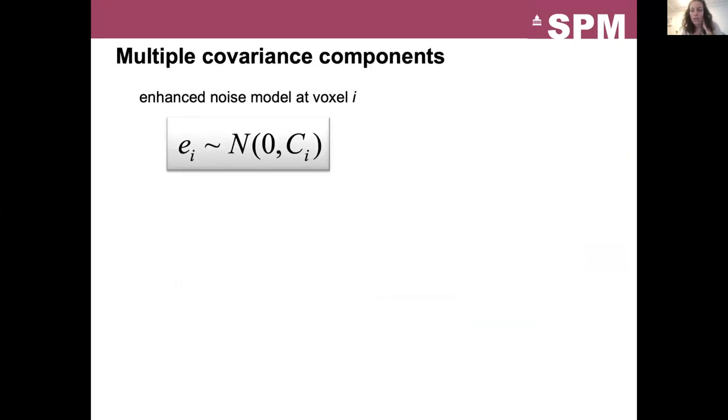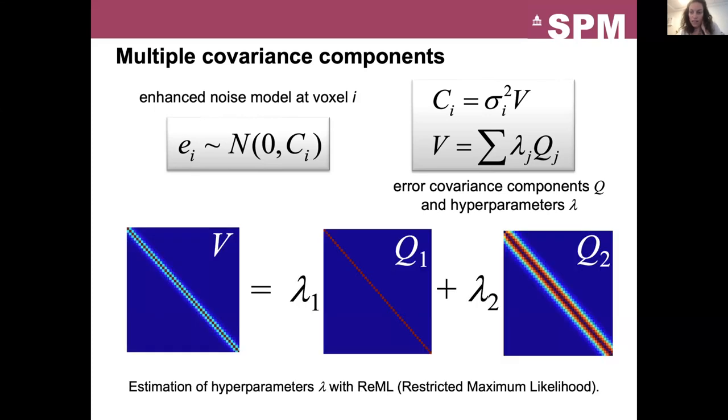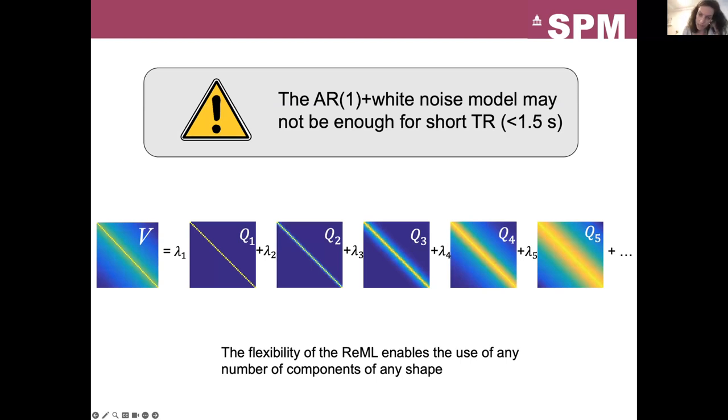In SPM, V is estimated as a linear combination of covariance components Q. If you choose the option AR1, autoregressive model, in the SPM design, which is on by default, the covariance matrix V will be estimated as a combination of two covariance components, Q1 and Q2, representing a mixture of an AR1 model and white noise. The hyperparameters lambda are estimated from the data with a restricted maximum likelihood estimator. So bear in mind that a unique set of hyperparameters is estimated for one time series and it's not voxel specific. For TR below 1.5 seconds, this model may not be sufficient. It is then recommended to use more components to be able to capture temporal correlation with a longer lag. And the flexibility of the restricted maximum likelihood enables the use of more components of any shape.